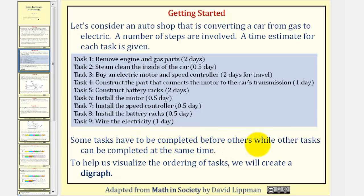Some tasks have to be completed before others while other tasks can be completed at the same time. For example, task one, removing the engine and gas parts, would need to be done before task six, installing the motor. However, maybe steps two and three could be done at the same time. Someone could be steam cleaning the inside of the car while someone else is buying the electric motor and speed controller. To help us visualize the ordering of tasks, we create what's called a digraph.